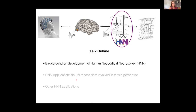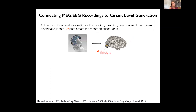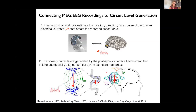To develop a model connecting what we're recording outside the head to what's going on at the microcircuit level, the first step is to apply inverse solution methods to estimate the location, direction, and time course of the big electrical currents in the brain — called primary currents — that create the recorded sensor data. From there, we need to think about how these primary currents are generated inside the brain. We know they come from post-synaptic intracellular current flow in the long, spatially aligned cortical pyramidal neuron dendrites.